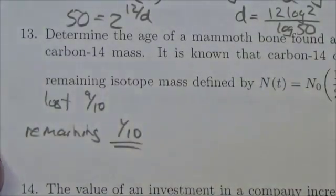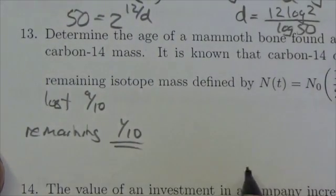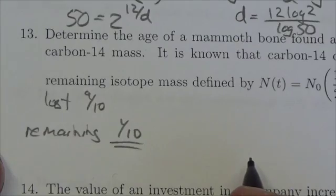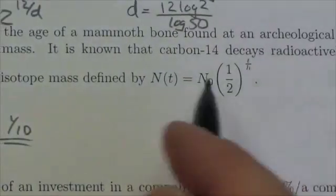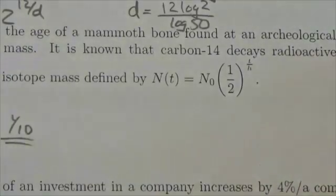It's known that carbon-14 decays radioactively with a half-life of 5,800 years with remaining isotope mass defined by the equation. So here's our equation and we're supposed to figure out the age here.